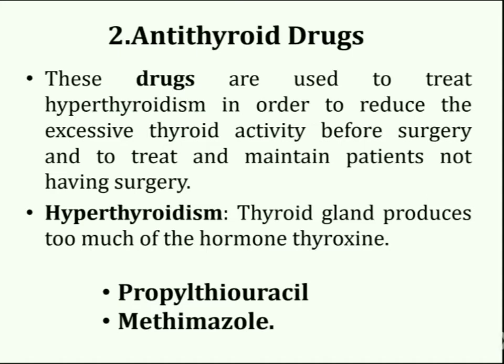Hyperthyroidism occurs when your thyroid gland produces too much of the hormone thyroxine. It can accelerate your body's metabolism, causing unintentional weight loss and a rapid or irregular heartbeat. Two of the main antithyroid drugs include propylthiouracil and methimazole.